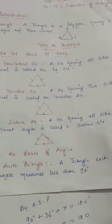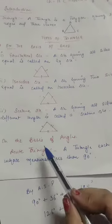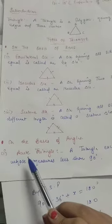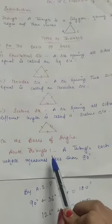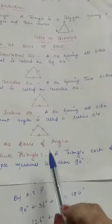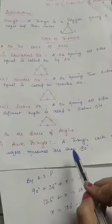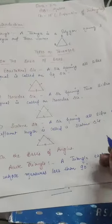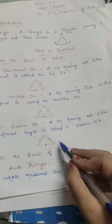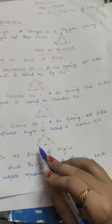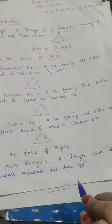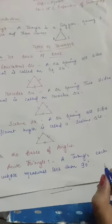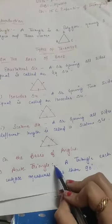Now the next type is on the basis of angles. First is the acute triangle. An acute triangle is a triangle each of whose angles measures greater than 0 and less than 90 degrees — so not exactly 90, like 89 degrees is okay, but not 90.